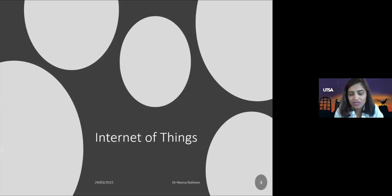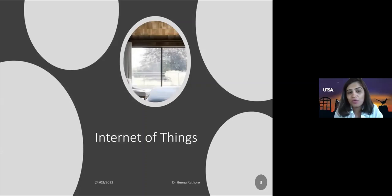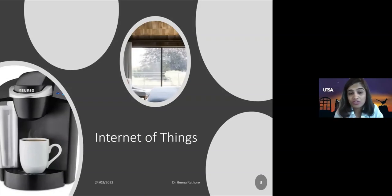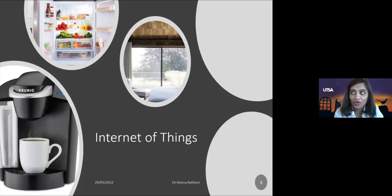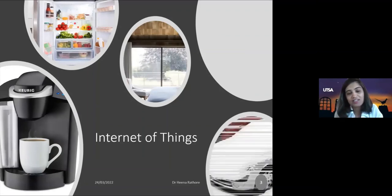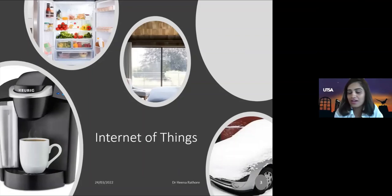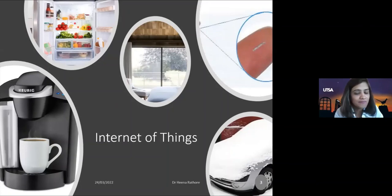Internet of Things — everyone is aware. Imagine you wake up in the morning and your curtains are already pulled. Your coffee machine has already poured your coffee. You go outside, it was snowing, but your car had no snow — it was removed. You had a doctor's appointment and all your vital parameters, including blood pressure, get transmitted to the doctor. All this is possible using Internet of Things.